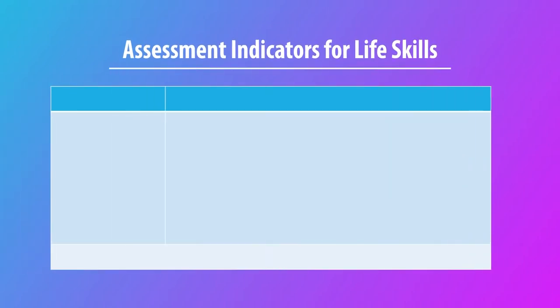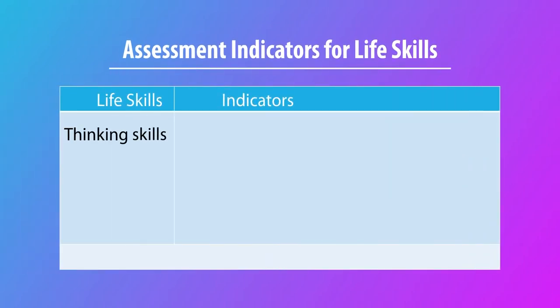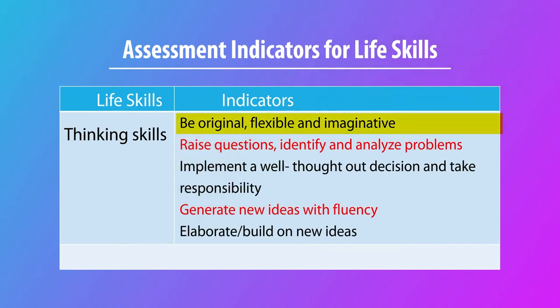When thinking about life skills under the category of thinking skills, we need to assess whether learners are original, flexible, and imaginative in their attitude and behavior. Think about a science learner — if they cannot think originally or imaginatively, how can they arrive at a new or better solution? Many things in science started with imagination, later concretized and established through experimentation and verification of facts.